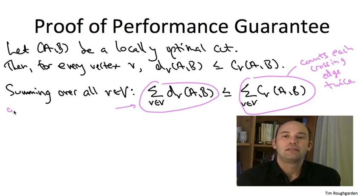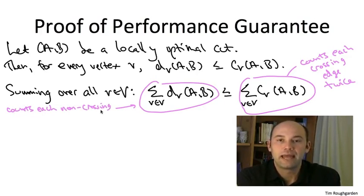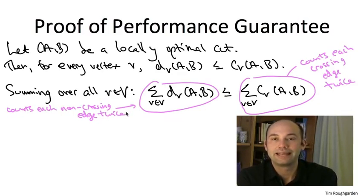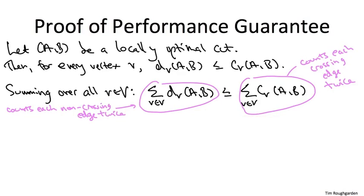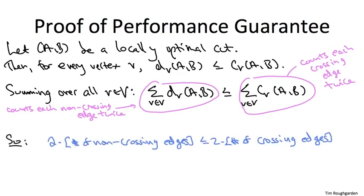We can apply exactly the same reasoning to the left-hand side. What is this sum counting? It's counting each non-crossing edge exactly twice. Consider an edge, again, say U, X, whose both endpoints are on the same side. That's going to be counted once in this sum when V equals U, and then again when V equals X.